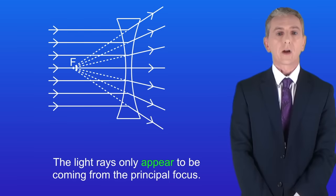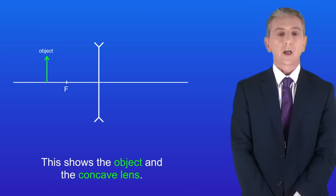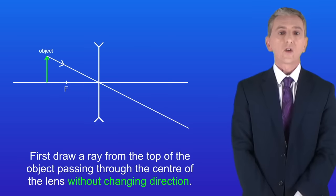Okay, so let's draw a ray diagram showing the image produced by a concave lens. So here's the object and the concave lens. First we draw a ray from the top of the object passing through the center of the lens without changing direction.